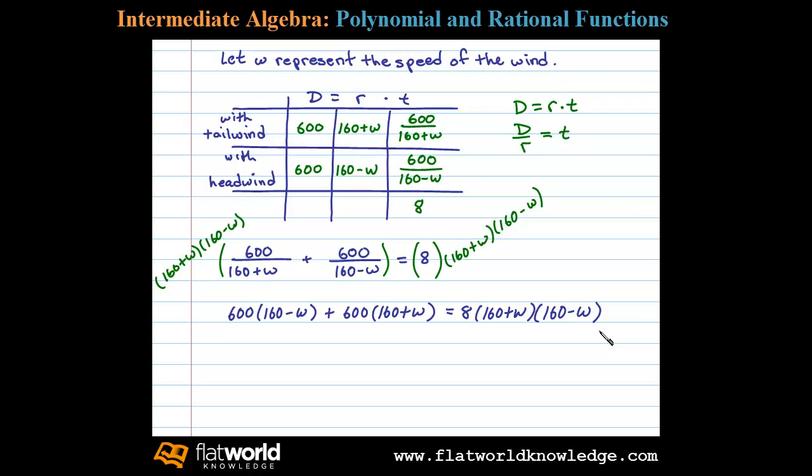Now at this point, I noticed all these coefficients are divisible by 8, so let's divide both sides by 8 next. Now at this point, we will apply the distributive property to both sides of this equation, and then collect like terms.